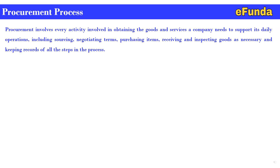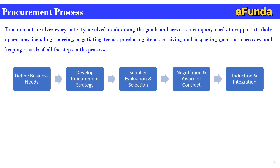For better understanding, please refer to the block diagram below where the process is defined. The steps are: first, define business needs; second, develop procurement strategy; third, supplier evaluation and selection; fourth, negotiation and award of a contract; and fifth, induction and integration. We will see each process in detail.